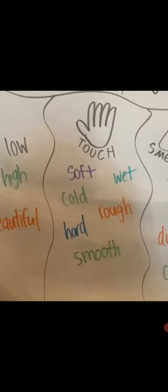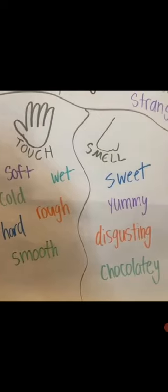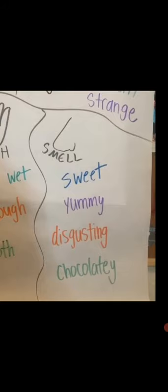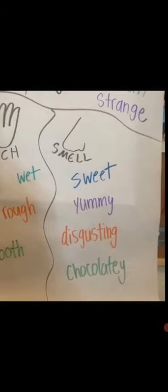Touch-related words are like soft, wet, cold, rough, hard, and smooth — things that you can touch. Smell-related words are sweet, yummy, disgusting, chocolatey, flowery, and so on.